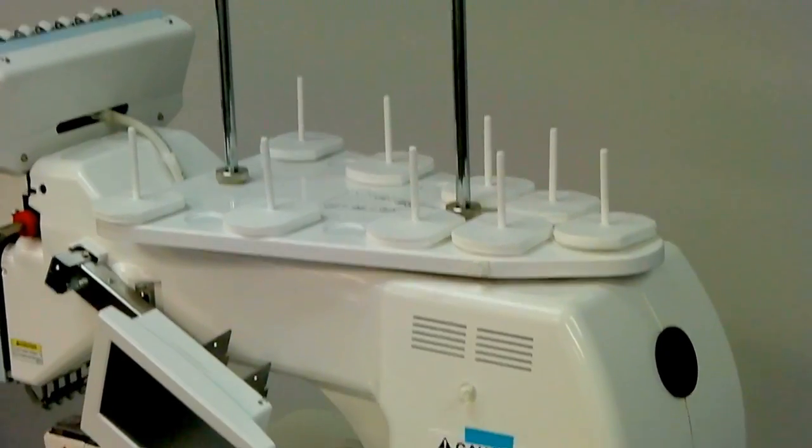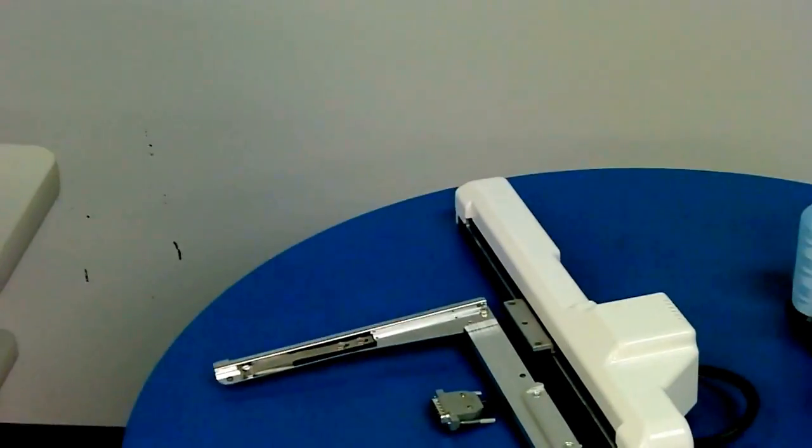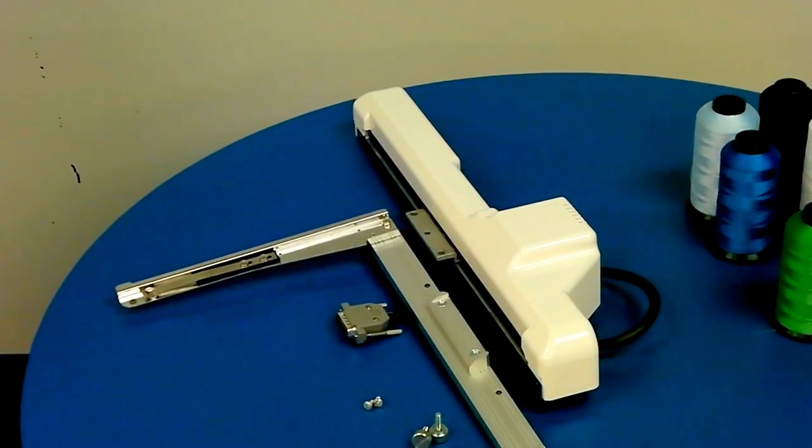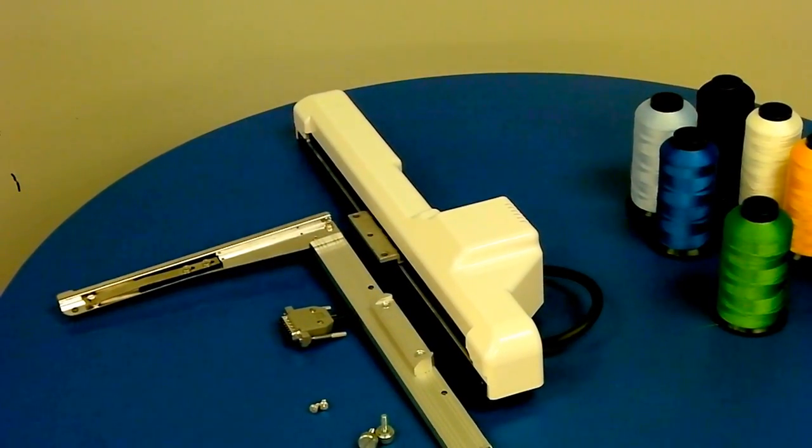What we're going to do is basically what's left is the X carriage. Going over to our table here to see what's left, we've laid out some thread cones here as well as the carriage. Let's explain the different parts of that.